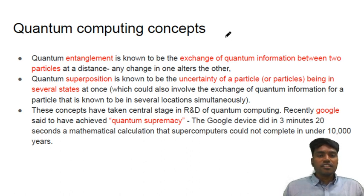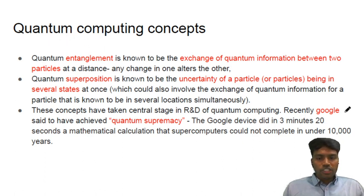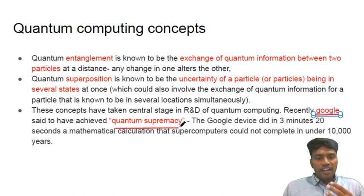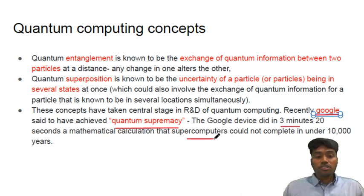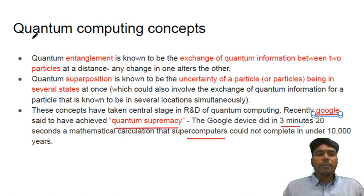Another favorite area of UPSC is the new science and technology areas. For example, recently in the last year they asked about LTE and Volta technology. Today we will be seeing quantum computing. Recently, there has been news about Google saying that they have achieved quantum supremacy. What does that exactly mean? Quantum supremacy means they use quantum concepts to solve a problem within three minutes, which supercomputers would take at least 10,000 years. This is a huge achievement in science and technology. UPSC might ask you directly what quantum supremacy is, or they may go a step further and ask about quantum concepts important in quantum computing.